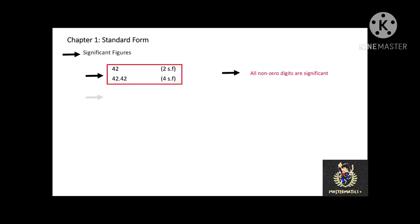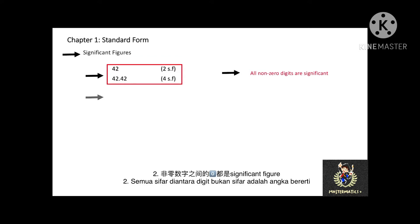Second, all zeros between non-zero digits are significant. Therefore, 4.02 is 3 significant figures, and 4002 is 4 significant figures.